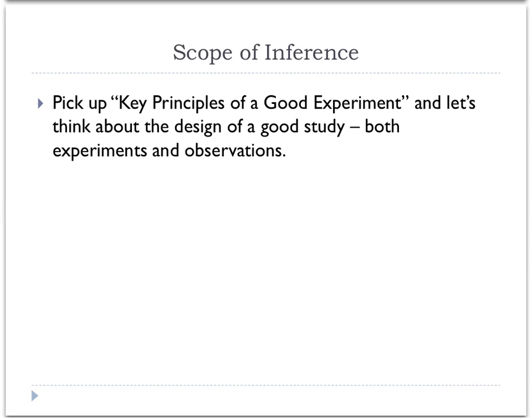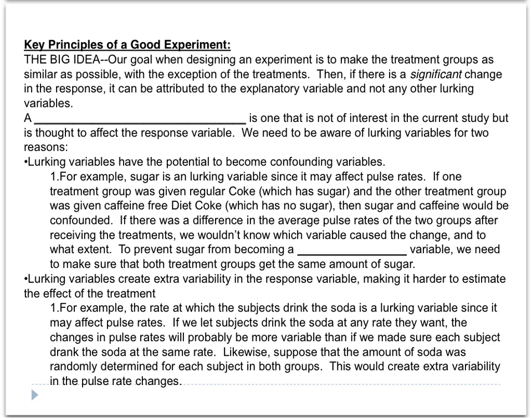Look for the link for the key principles of a good experiment and download it. We're going to go over some of the terminology for creating a good experiment. Your goal is to take however many groups you have — usually two — and make them as similar as possible in every element except whatever treatment you're imposing. You want the two groups to be almost identical in terms of gender, health, race, height — whatever factors you're looking at. You want them to be as similar as possible.